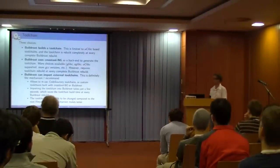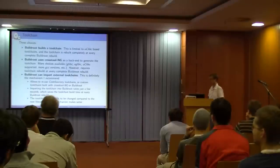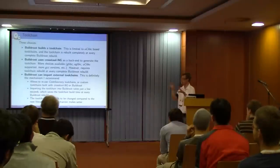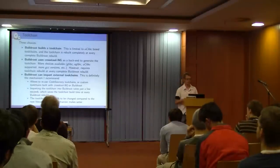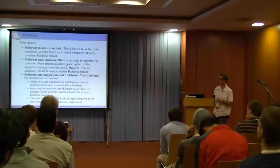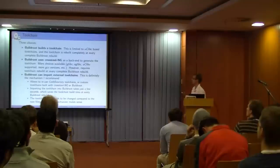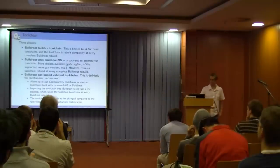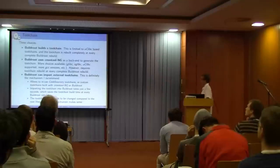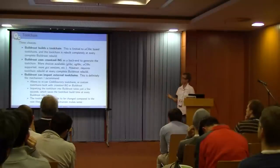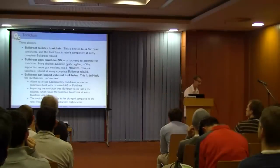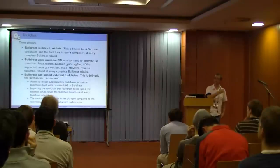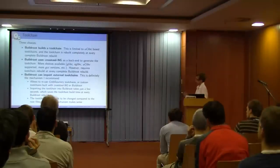Now for best practices. For toolchain building, you have three choices: have BuildRoot build one (limited to uClibc); use crosstool-ng as a backend (supports glibc, eglibc, uClibc and more GCC versions); or use an external pre-built toolchain. The drawback of the first two is that make clean removes the toolchain, so the next full build has to rebuild it from scratch.